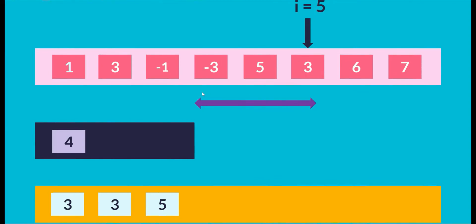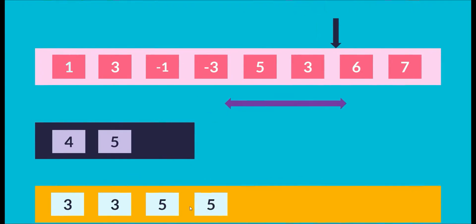We move to index 5, element 3. Since 3 is smaller than 5, we just push index 5 onto the DQ. We've now looked at all elements in this sliding window. The maximum is still at the front — index 4, element 5 — so we push 5 onto the output array again.